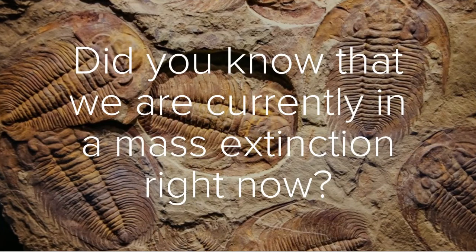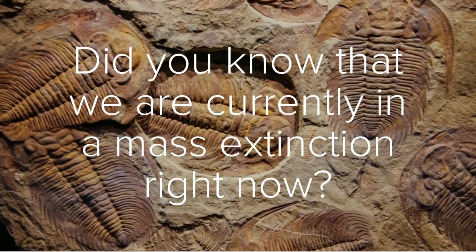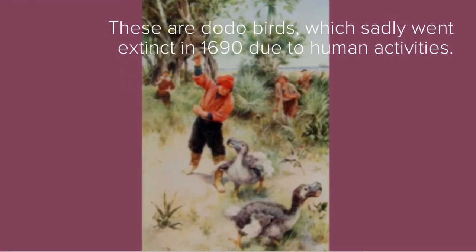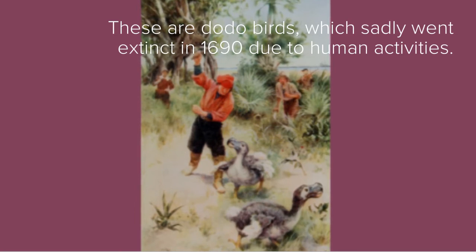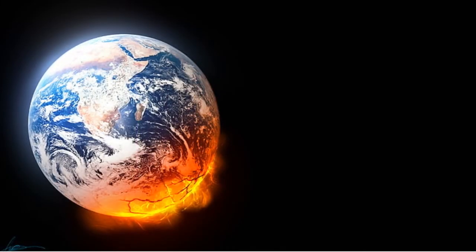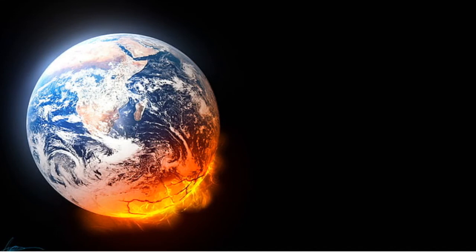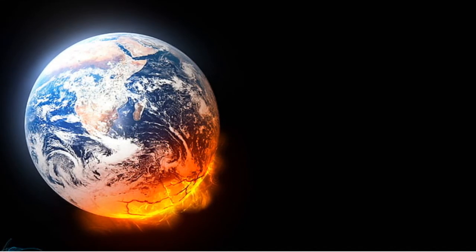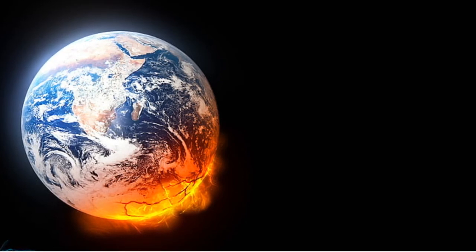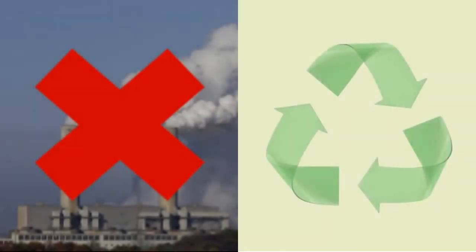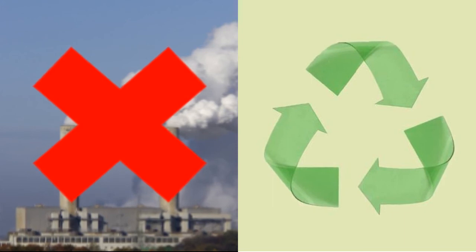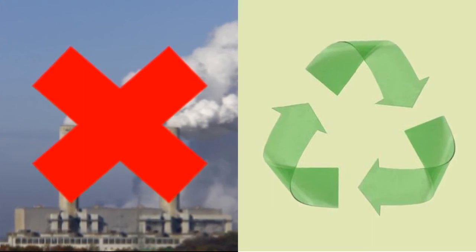Did you know that we are currently in a mass extinction right now? The Holocene extinction, also known as climate change, is the extinction of biodiversity caused by us humans. And, in the near future, if we don't do something, we will have a mass extinction unlike any other in our planet's history, likely even bigger than the Permian to Triassic Extinction Event. So, let's make a change so that this nightmarish scenario doesn't happen, and life will continue for millions of years to come.